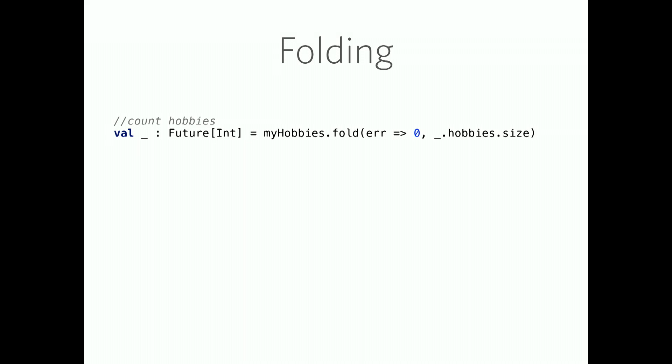And then lastly, we have folding. The only way, we all know the only way to get rid of your future is to block on it. You don't really want to do that, but that's another discussion. You can, however, get rid of your either T by handling both cases and consolidating into one type. In this example, maybe I'm okay that if we had an error that we just return a count of zero for how many hobbies a person had. So that's what this is doing. If there's an error, if we had a left or an error, I'll just return zero, a future that contains zero. Otherwise, we'll count how many hobbies they had.